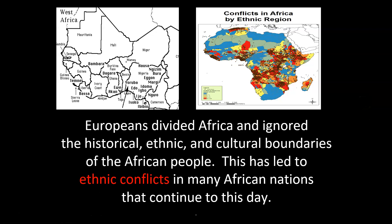Europeans divided Africa and ignored historical, ethnic, and cultural boundaries. Here's an analogy: in class, I know certain people don't get along, so I'd seat them far apart. The Europeans did not care. These are the ethnic groups within Africa, and political lines were drawn regardless of who was there — putting different peoples with conflicts inside the same borders. When Europeans left, you can imagine they said 'play nice, get along,' but it doesn't work like that, as you can guess.